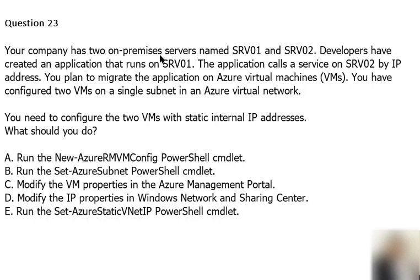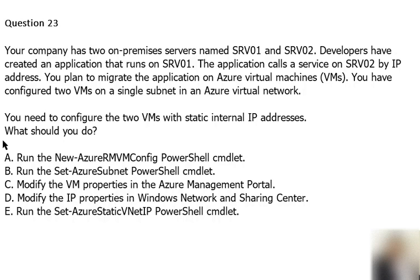Question 23: Your company has two on-premise servers named SRV01 and SRV02. Developers have created an application that runs on SRV01. The application calls a service on SRV02 by IP address. You plan to migrate the application to Azure virtual machines. You have configured two virtual machines on a single subnet in an Azure virtual network. You need to configure the two virtual machines with static internal IP addresses. What should you do?